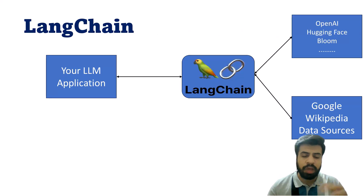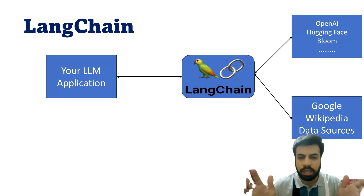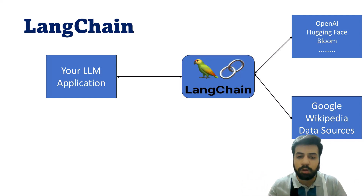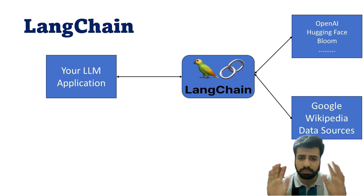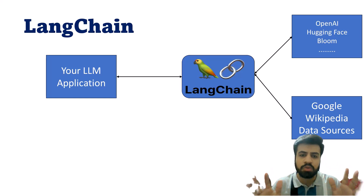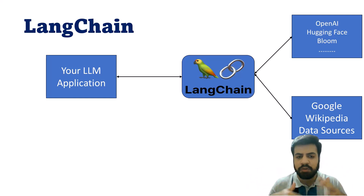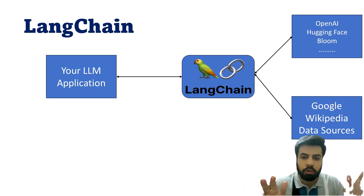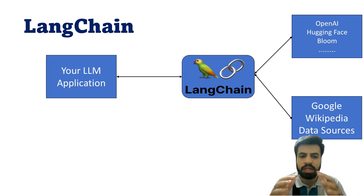So why do we need LangChain? Using LangChain, you can use OpenAI models like GPT-3.5 and GPT-4, which are paid. But if you don't want to pay, LangChain also integrates HuggingFace models and other free alternatives. You can switch from OpenAI to HuggingFace by simply changing the import — without needing to rewrite your code.